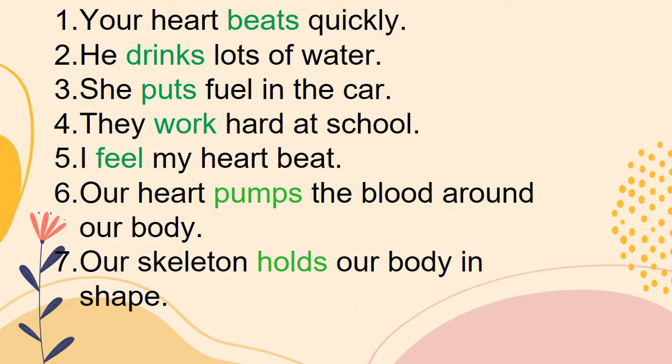Look at some more examples: 'Your heart beats quickly. He drinks lots of water. She puts fuel in the car. They work hard at school. I feel my heart beat.' When the subject is singular, we use a singular present tense verb with 'S' at the end — beats, drinks, puts. If the subject is plural, or we use 'they' or 'I,' we use the verb without 'S.'